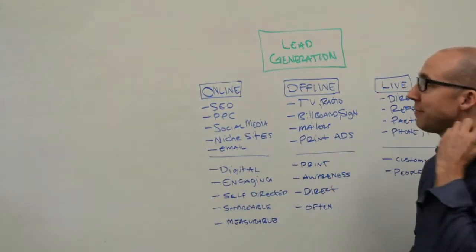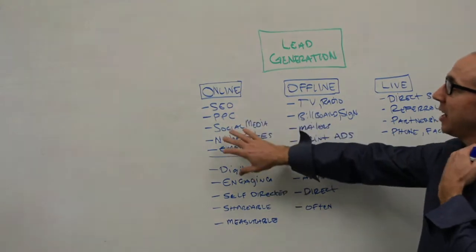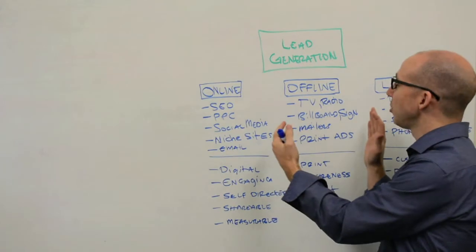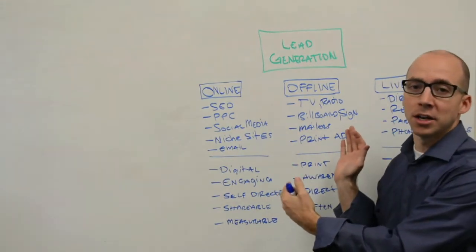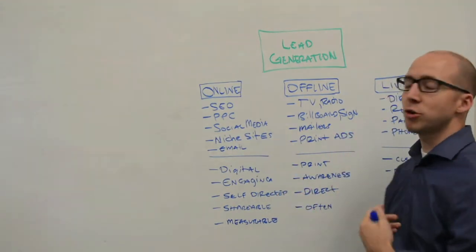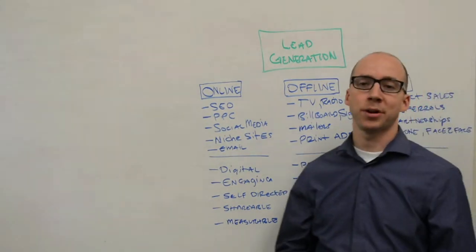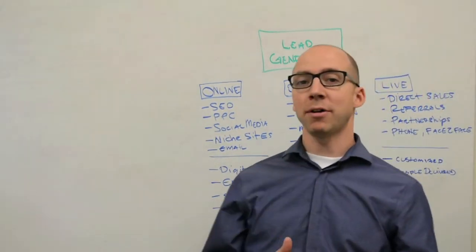Second to that would be offline. Now, online has become so central in lead generation that you can almost call almost every other effort an offline strategy. These are traditional media sources: TV, radio, billboards, mailers, print ads, virtually anything that would happen offline.